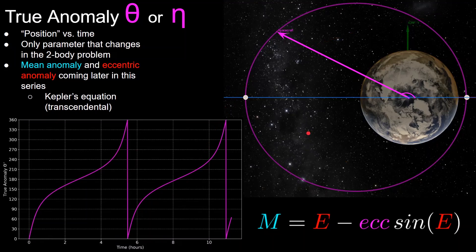Note that mean anomaly and eccentric anomaly also describe spacecraft position in different ways, and we'll cover those later in the series. They appear in Kepler's equation, which is a transcendental equation — given a mean anomaly, you cannot algebraically solve for eccentric anomaly; you must use a root solver method or series expansion.